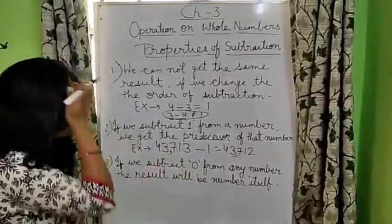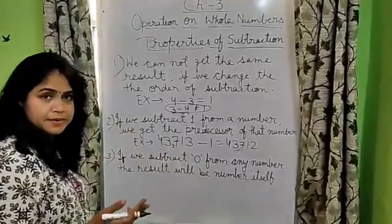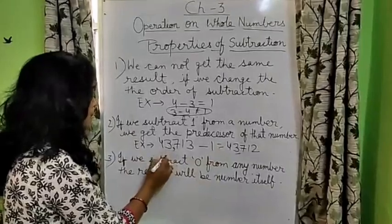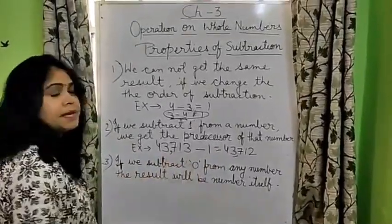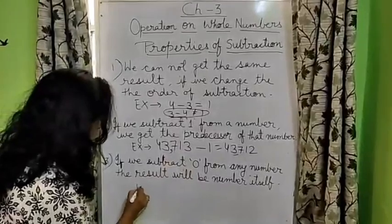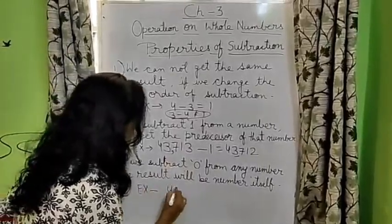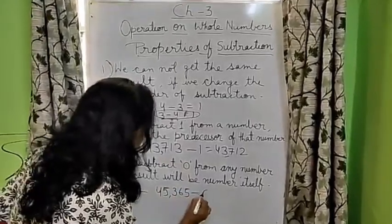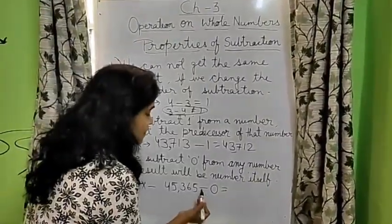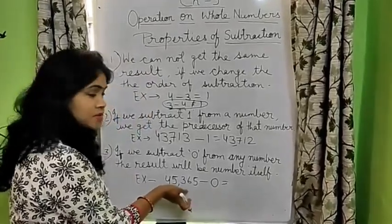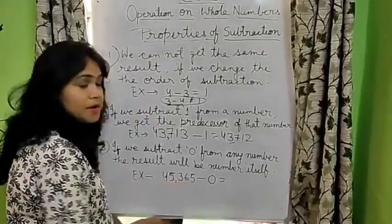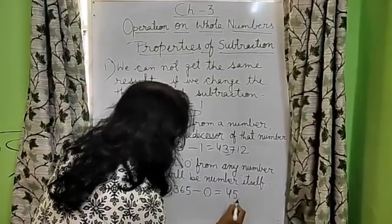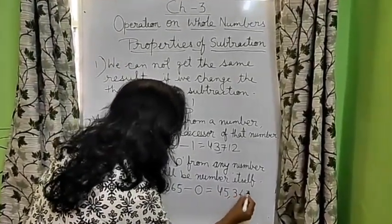Next property is, if we subtract 0 from any number. If we subtract 0 from any number, the result will be number itself. You can see, if we have 45,365 and if we subtract 0 from 45,365, what do we get? Number itself, 45,365.